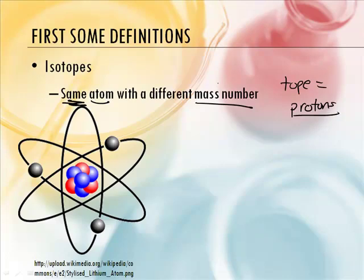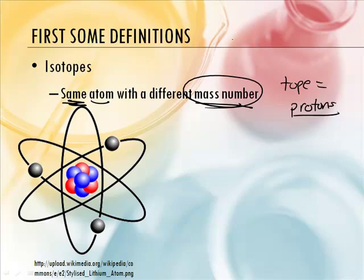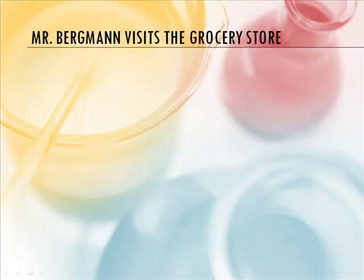So it's the same atom with a different mass number? Mass number — that's a new one. Well, mass number makes sense. Mass is how much stuff there is — how much matter. So the mass number is like how much it weighs, sort of. It's not weight, it's mass. Why don't we take a trip to the grocery store?